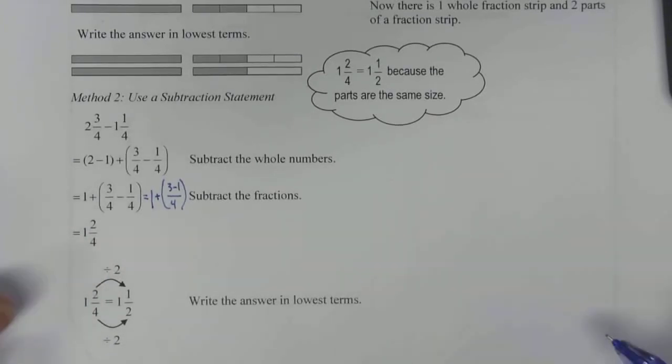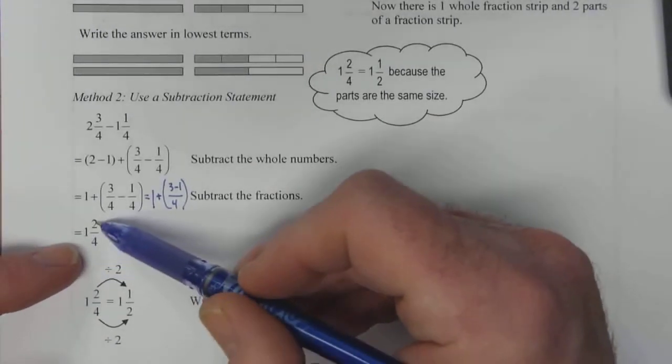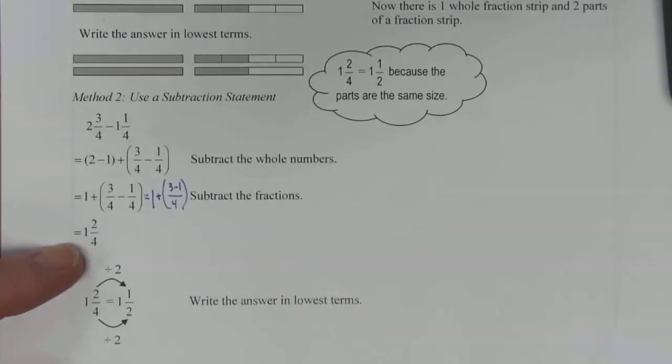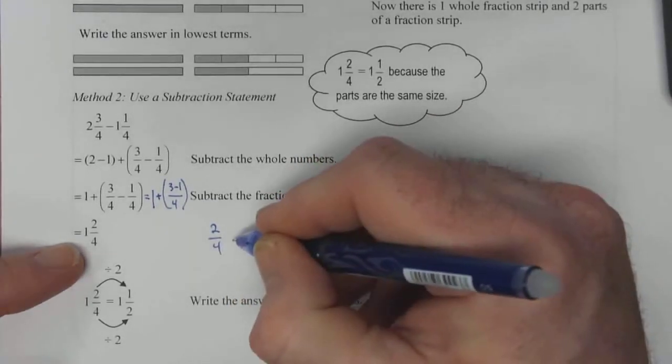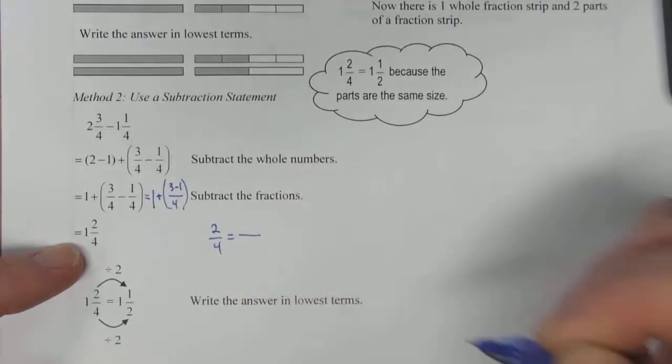But we also don't have this quite in lowest terms yet. We can take two over four and we can say it's equal to something else.